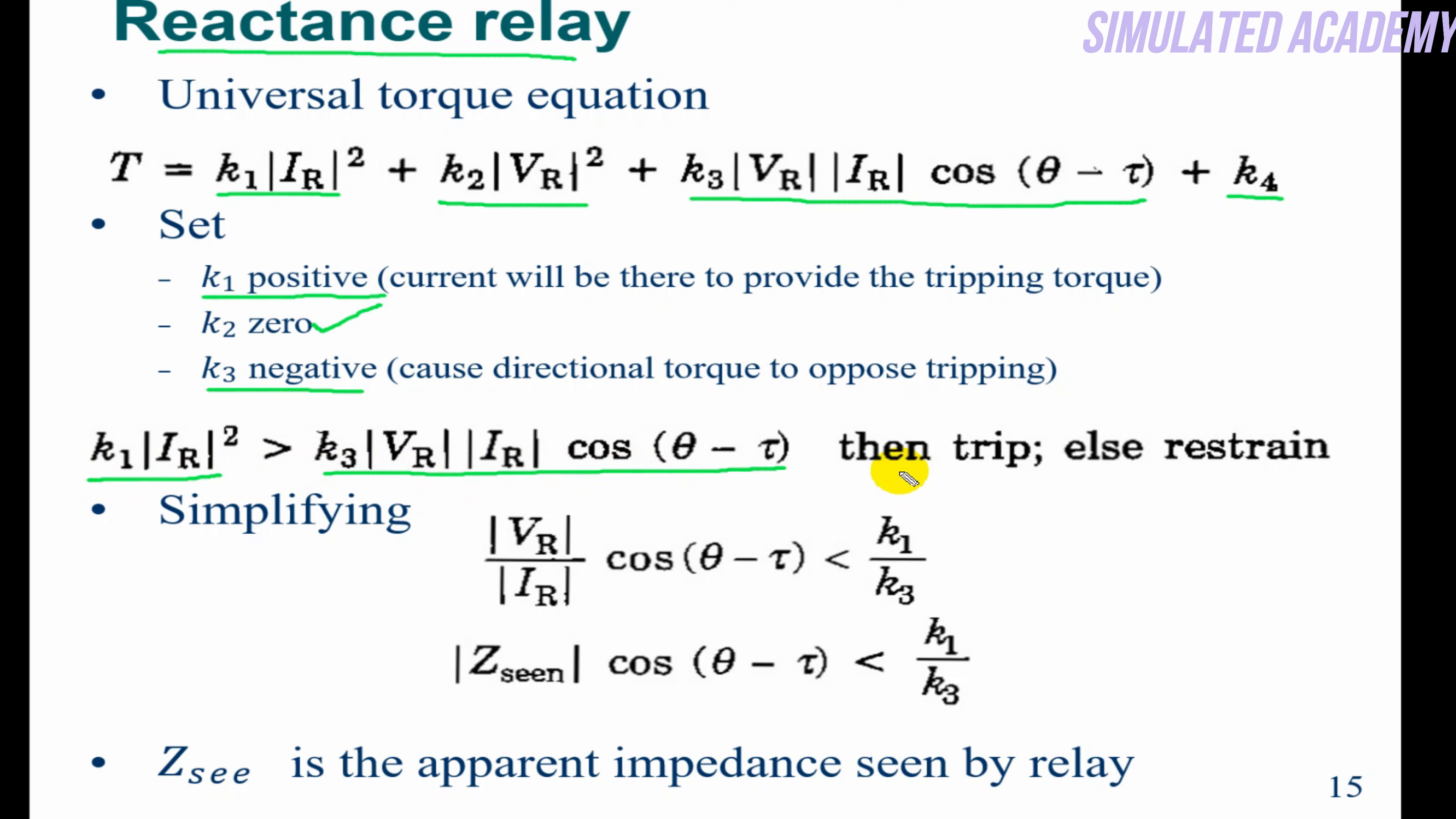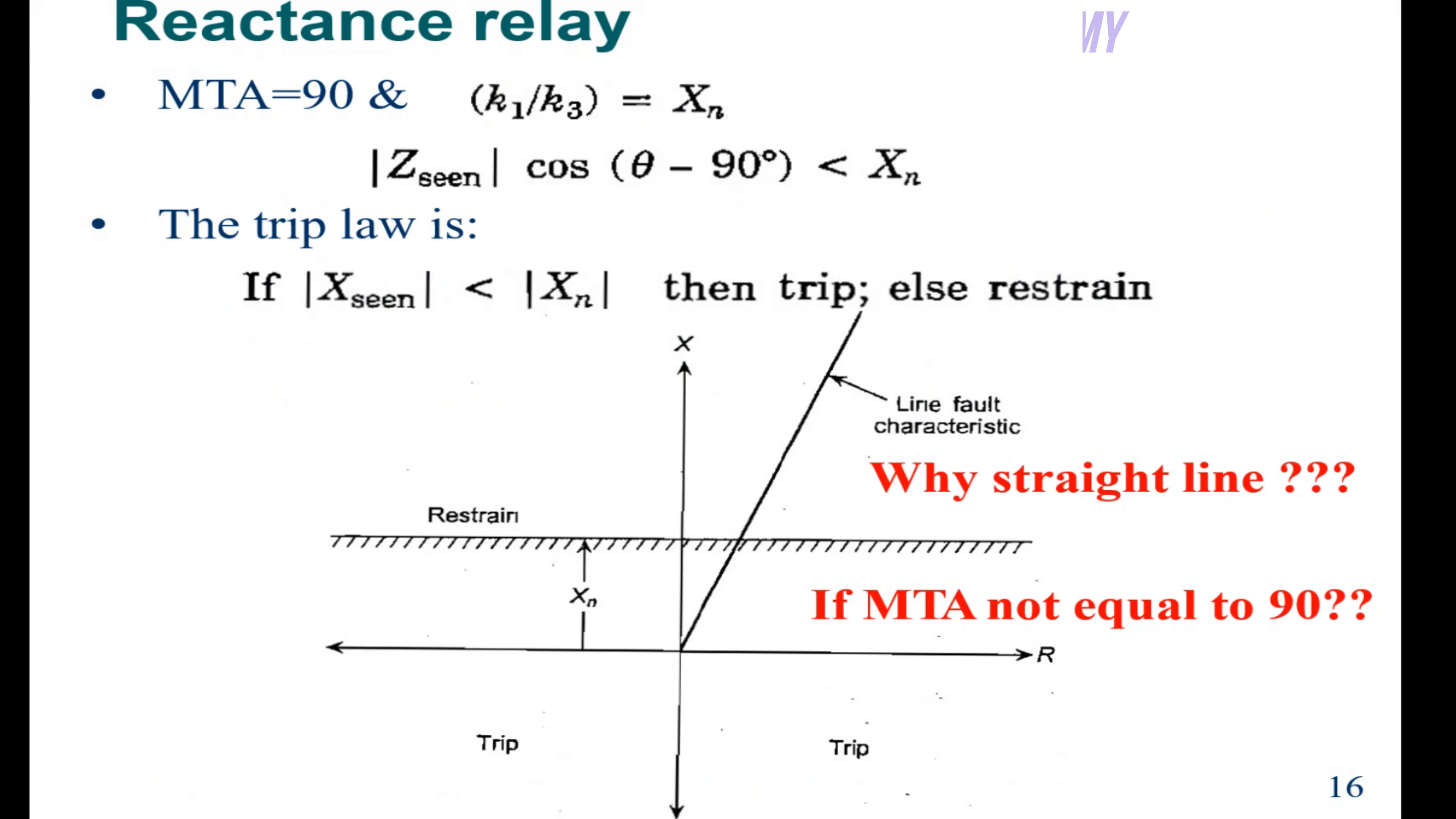If I simplify, |Z_seen| cos(θ - τ) is less than or equal to k1/k3, where τ is the maximum torque angle and θ is the angle between current and voltage. Z_seen is the apparent impedance seen by the relay. If the relay calculates impedance from current and voltage, this is called Z_seen.